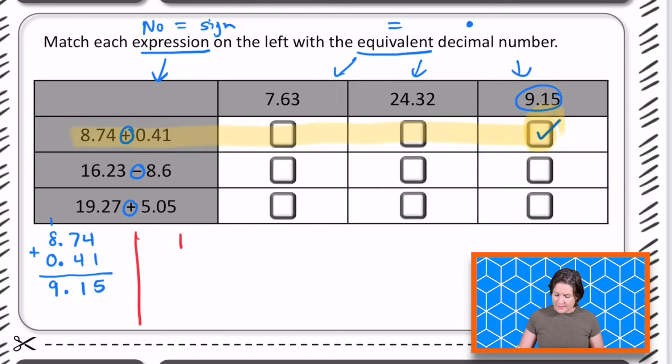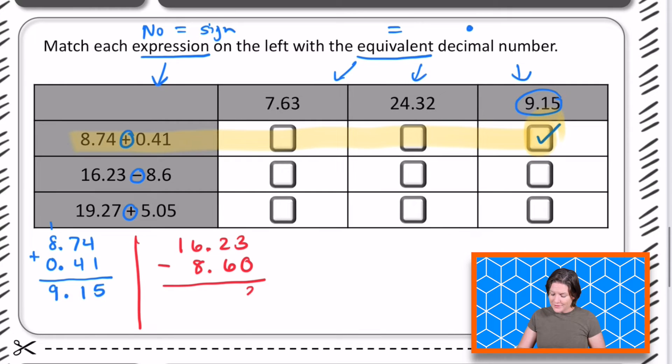Oh, I'm going to change my color to red for this next one. We have 16 and 23 hundredths minus 8 and 6 tenths. So again, I'm going to go ahead and just line up my decimals now. And write my values here. And I know that right underneath that 3, there's nothing there. So I'm going to hold that place with a zero. All right. 3 minus 0 hundredths is 3 hundredths. 2 tenths minus 6 tenths. What is what? 6 tenths.